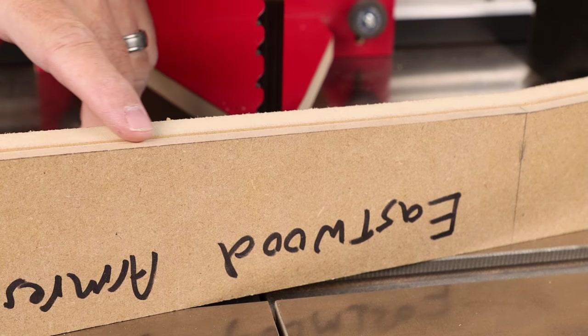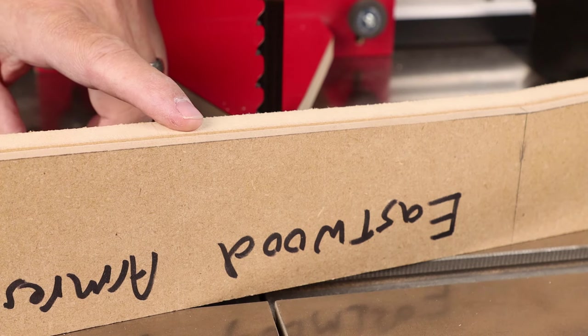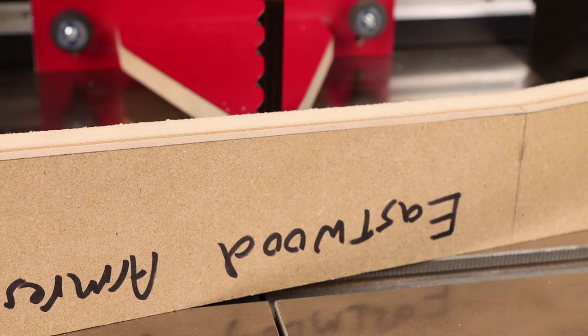And that way you'll have a really thin, consistent difference between your workpiece and your template, and you can finish that up by sanding or just flush trimming at the router table.